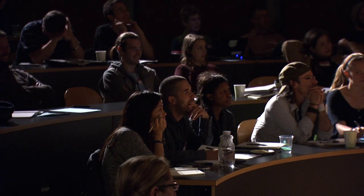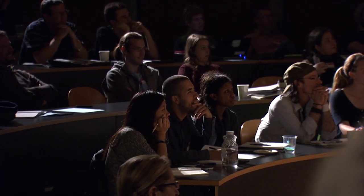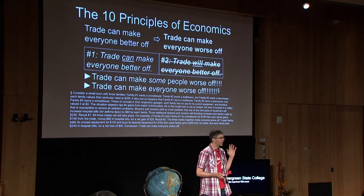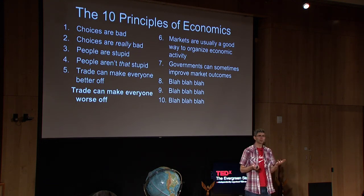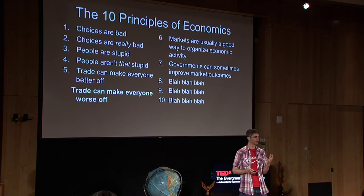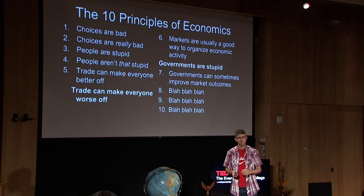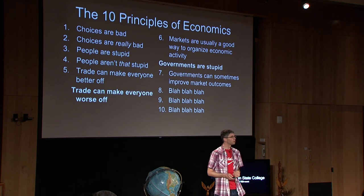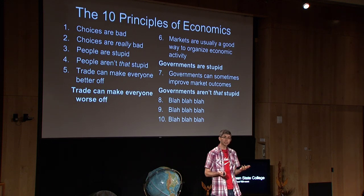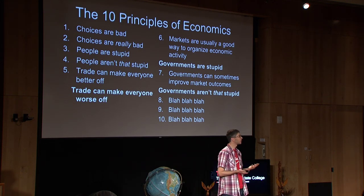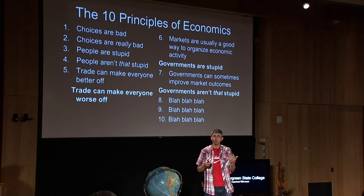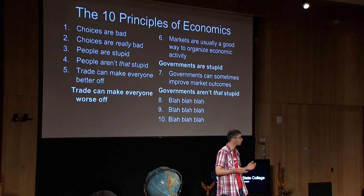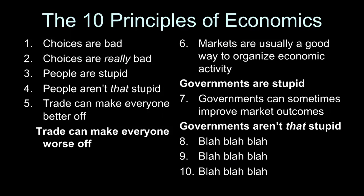I figured some of you have some questions about this, so I added a footnote with some details. Now that we've cleared that up, the last two principles: markets are usually a good way to organize economic activity — translation: governments are stupid. And governments can sometimes improve market outcomes — governments aren't that stupid. These follow immediately from principle five and its translation. If trade can make everyone better off, what the heck do we need government for? Just let people trade. Governments are stupid. But if trade can make everyone worse off, we better have a government around to stop people from trading.